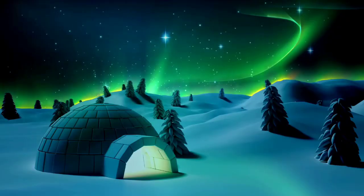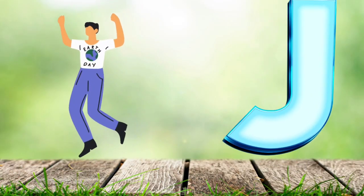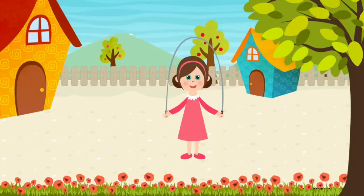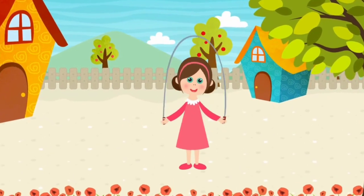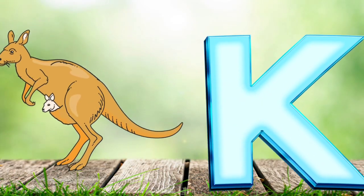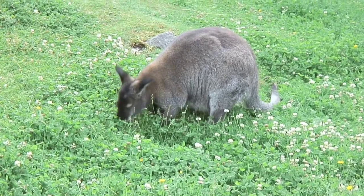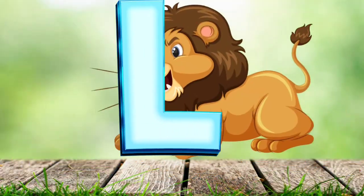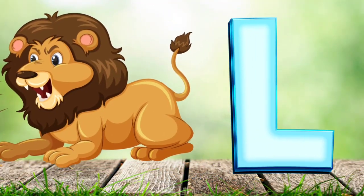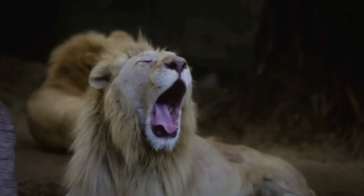I is for Igloo. I, I. Igloo. J is for Jump. J, J. Jump. K is for Kangaroo. K, K. Kangaroo. L is for Lion. L, L. Lion.